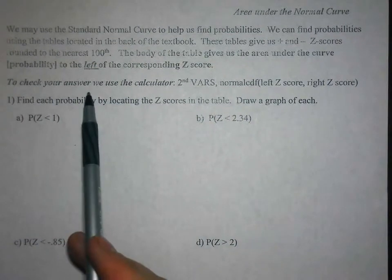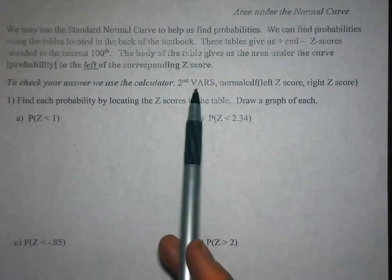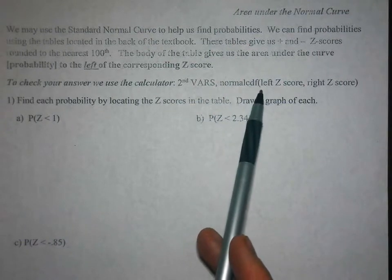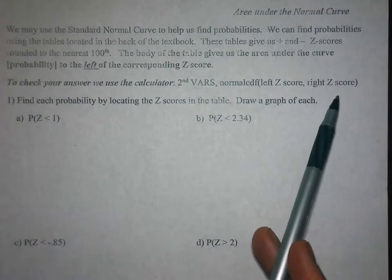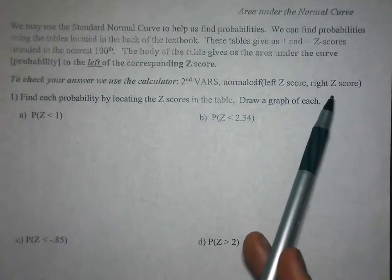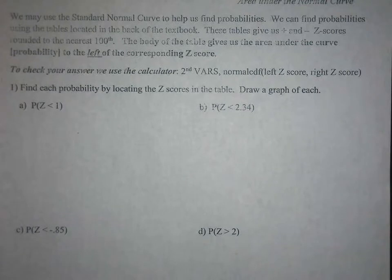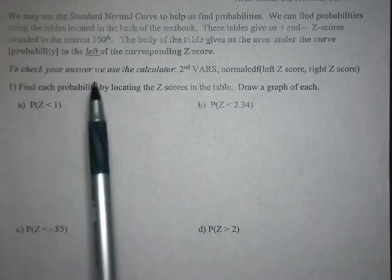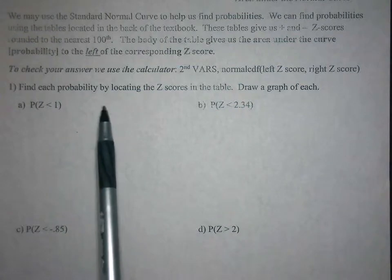We can use our calculator to check our answers, using second vars and then normal CDF, and we put the left z-score or the right z-score. So, find the probability by locating z-scores in the table and draw a graph of each.